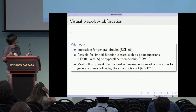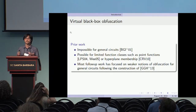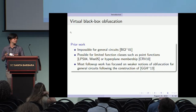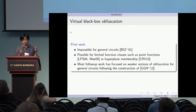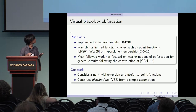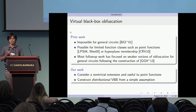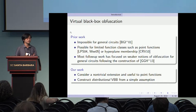As the previous talk mentioned, most of the follow-up work on obfuscation has been on trying to come up with a weaker notion of obfuscation — indistinguishability obfuscation (iO) — and trying to do this for general circuits. We're going to take the opposite direction in this work and ask: starting from VBB for point functions, what's the most complex function class that we can still obfuscate from VBB without coming up with a new assumption?